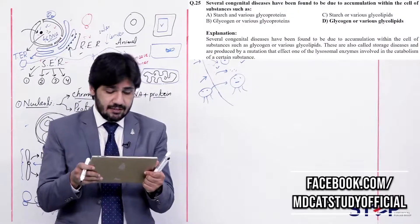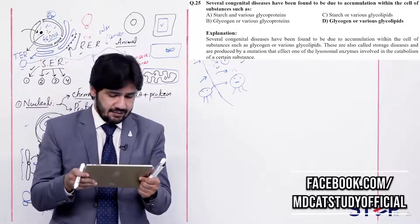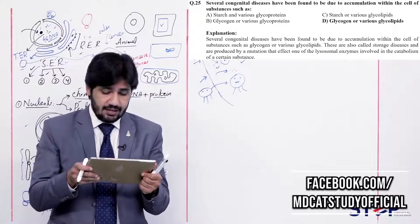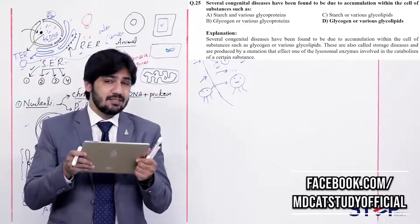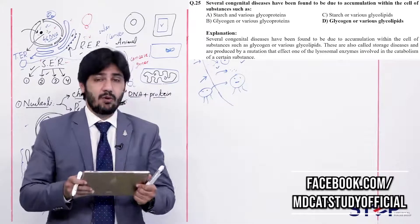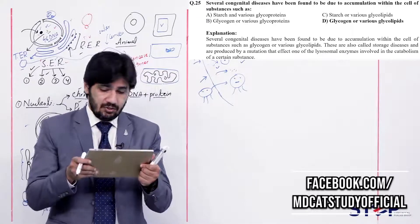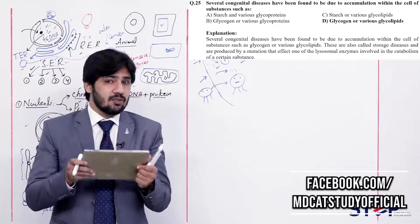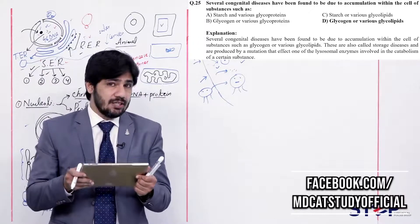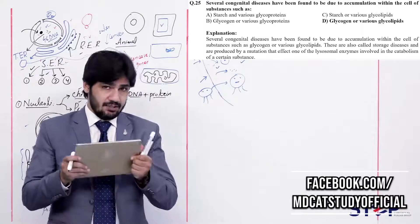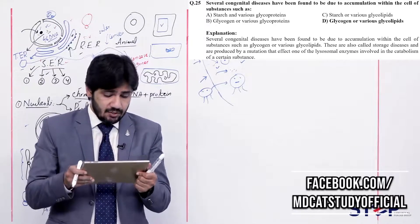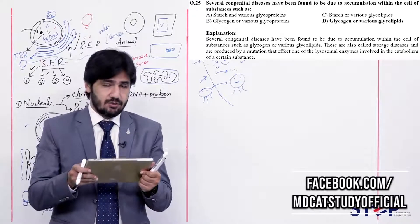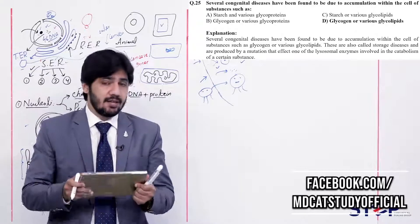Dictiosomes are Golgi apparatus involved in secretion. Glyoxysome is a plant-only organelle found only in seedling plants with lipid-rich seeds. Peroxisome is found in plants, animals, and yeast, and its function is the formation of peroxidase and its degradation. Question 25: Several congenital diseases result from accumulation within the cell of substances such as (alpha) starch and various glycoproteins, (beta) glycogen or various glycoproteins, (charlie) starch or various glycolipids, (delta) glycogen and various glycolipids.